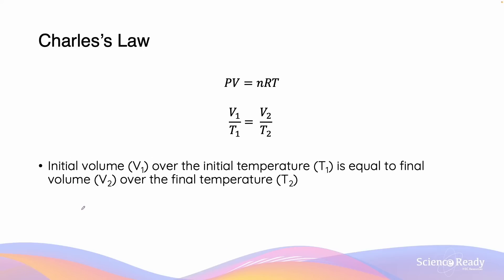The derivation of Charles's law from the ideal gas law PV equals nRT also provides us with the relationship V1 over T1 equals V2 over T2. This can be interpreted as, in the event of a change in either volume or pressure, because of the direct proportionality of V and T,